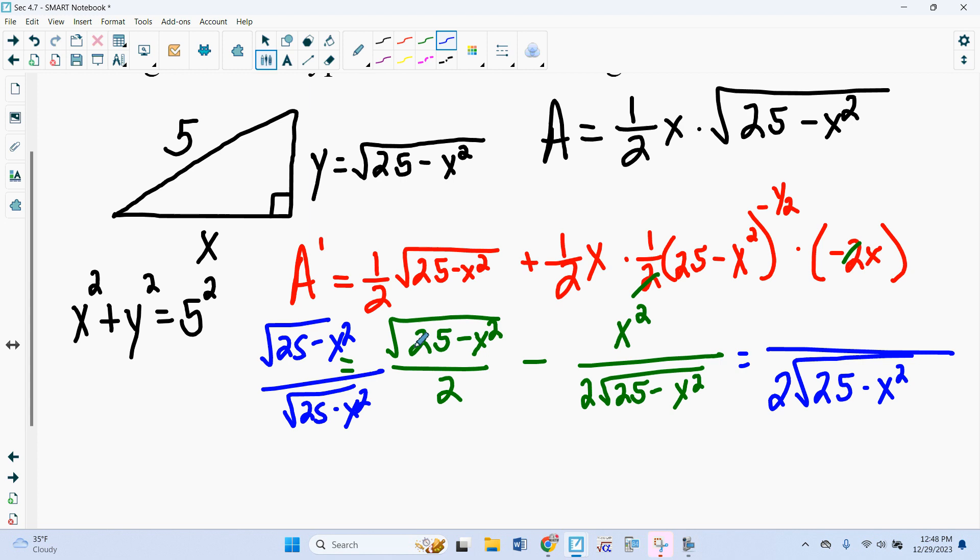And that will give me my denominator of 2 square root of 25 minus x squared. This square root of 25 minus x squared is going to give me 25 minus x squared over here minus x squared. So I end up with 25 minus 2x squared. So there is my derivative.